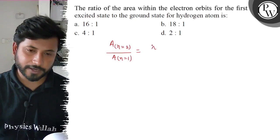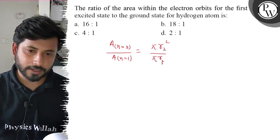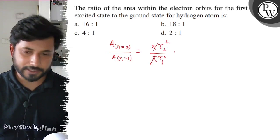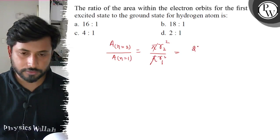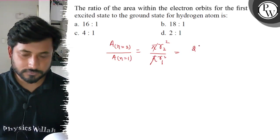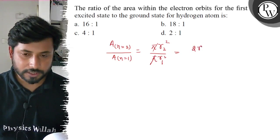Area will be pi r2 squared upon pi r1 squared. Pi over pi cancels, so r2 will be n squared r0. Two squared times r0, which is 2 times r0.